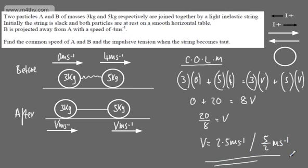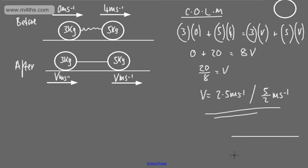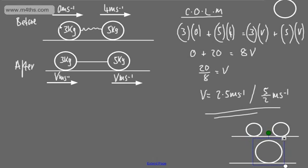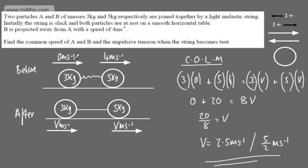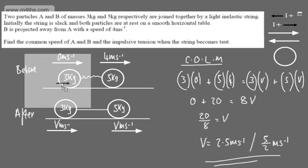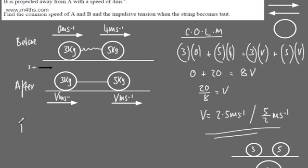Alternatively, you could model this as a combined system before and after. Now for the impulsive tension: impulse equals mass times (final velocity minus initial velocity). Considering particle A, the tension impulse acts to accelerate A from rest. The impulse on A will equal 3 × (2.5 − 0).